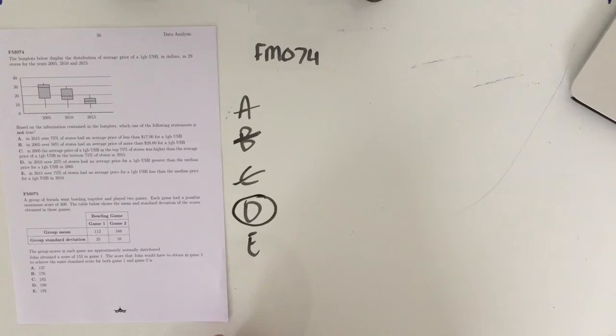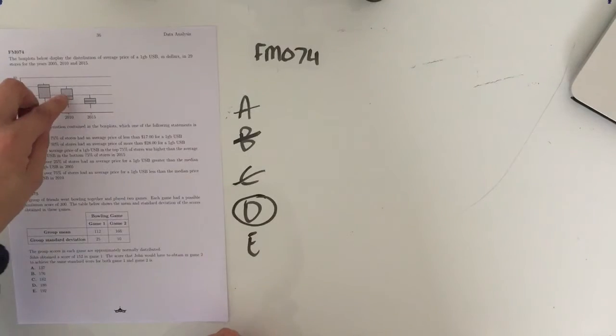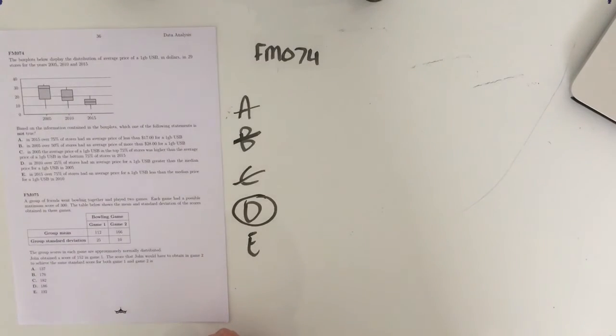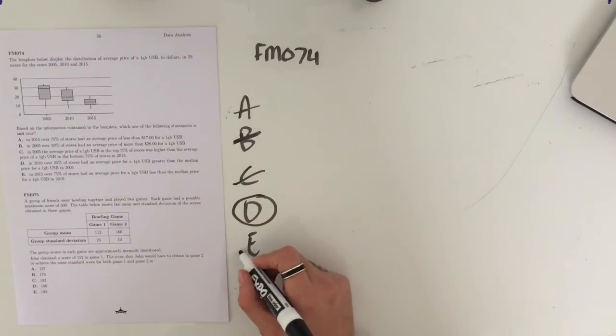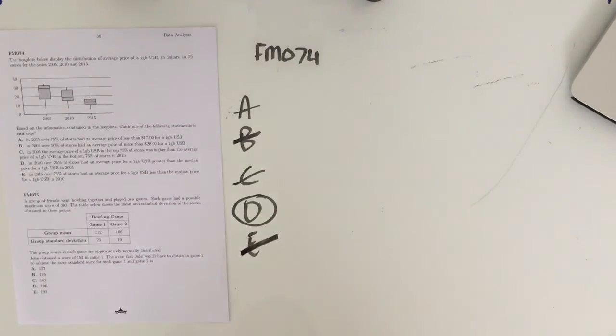So in 2015, over 75% of stores had an average price for a 1GB USB less than the median price for a 1GB USB in 2010. As you can see, the median for 2010 is above the bottom 75% of 2015. Means E is true. D is our final answer.